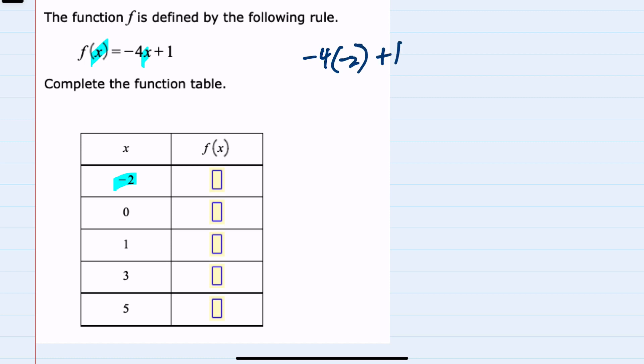Following order of operations, I would do multiplication first. -4 times -2 is 8, plus 1 would be 9. So f(-2) is 9.